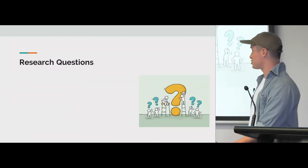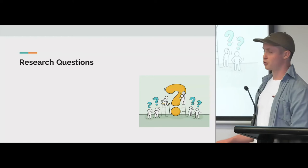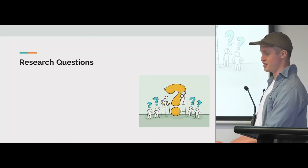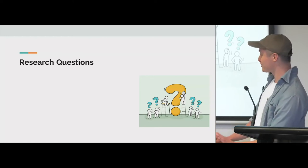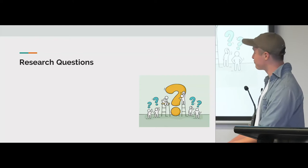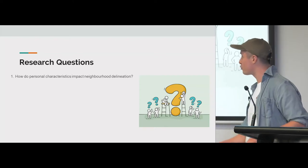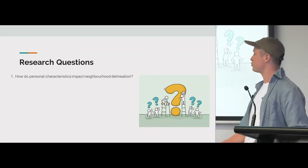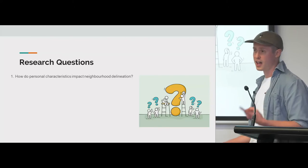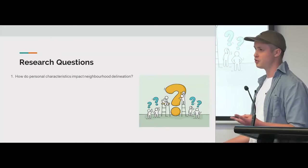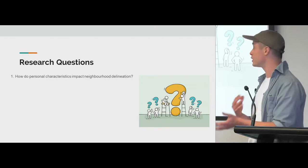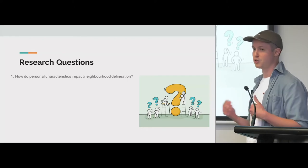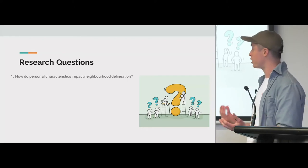My research questions are guiding my research — these have changed about ten times throughout the process, but these are hopefully final. I'm interested in what personal characteristics impact neighbourhood delineations. If you think of things like age, gender, or how long you've lived in the neighbourhood, does that impact the size of it, the perimeter, the actual boundary itself?